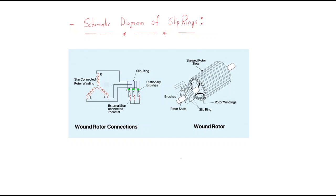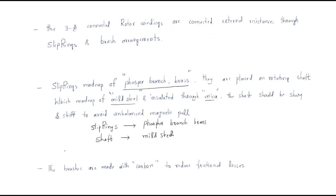There is insulation material available between the slip rings. This is the shaft, with the first slip ring, second slip ring, and third slip ring. We have insulation material between them to avoid contact, and that insulation is made with mica. The insulation material is used to avoid current flow between the windings and the shaft. The shaft should be stiff and sharp to avoid mechanical unbalance — to avoid the unbalance of mechanical pull.